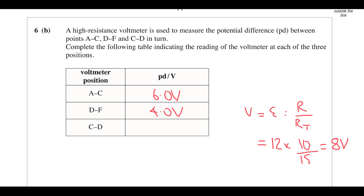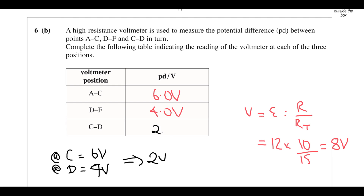Between C and D: we need to find the potential at C and the potential at D. At C, it's gone through one of the two equal resistors, so the potential at that point is 6 volts. At D, it's gone through the 10 kΩ resistor — it started at 12, lost 8 across the 10 kΩ — so the potential at D is 4 volts. The potential difference between C and D is therefore 6 − 4 = 2 volts.